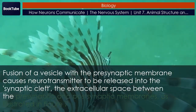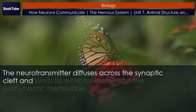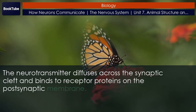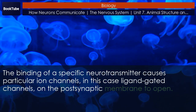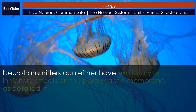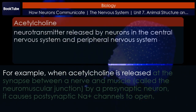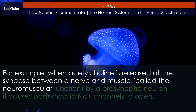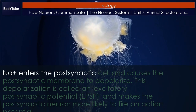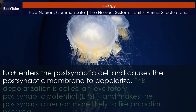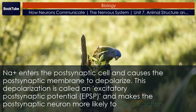Fusion of a vesicle with the presynaptic membrane causes neurotransmitter to be released into the synaptic cleft — the extracellular space between the presynaptic and postsynaptic membranes. As illustrated in Figure 7, the neurotransmitter diffuses across the synaptic cleft and binds to receptor proteins on the postsynaptic membrane. The binding of a specific neurotransmitter causes particular ion channels — in this case ligand-gated channels — on the postsynaptic membrane to open. Neurotransmitters can either have excitatory or inhibitory effects on the postsynaptic membrane. For example, when acetylcholine is released at the neuromuscular junction by a presynaptic neuron, it causes postsynaptic Na+ channels to open. Na+ enters the postsynaptic cell and causes the postsynaptic membrane to depolarize. This depolarization is called an excitatory postsynaptic potential (EPSP) and makes the postsynaptic neuron more likely to fire an action potential.